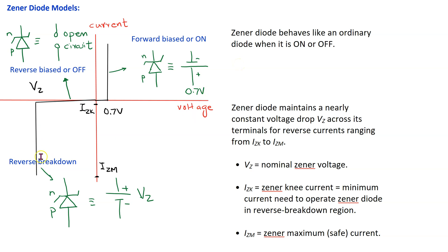When the Zener diode is in the reverse breakdown region it maintains a nearly constant voltage drop VZ across its terminals. Therefore for analysis, a Zener diode in reverse breakdown is modeled like a DC battery having magnitude VZ and polarity as shown.